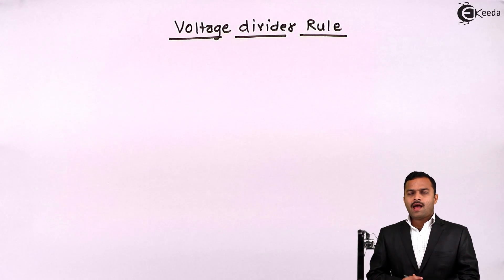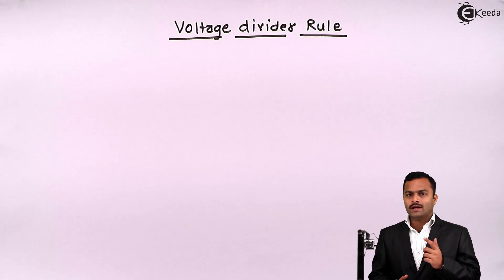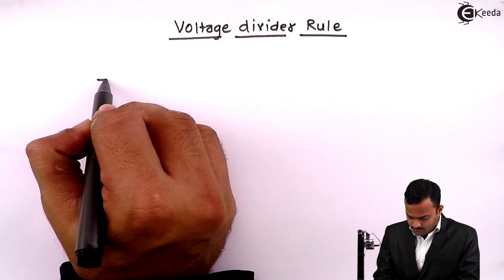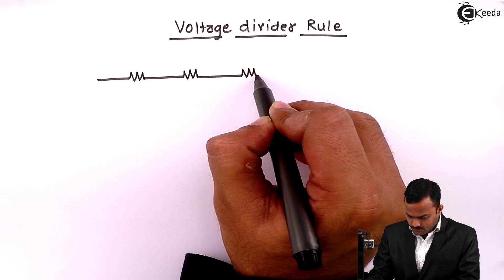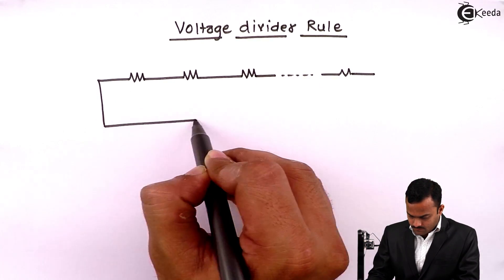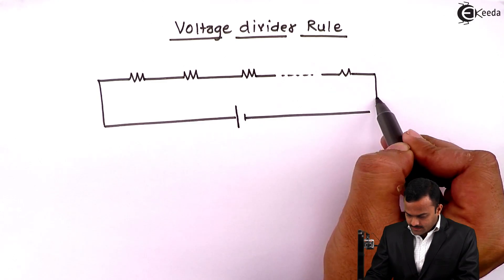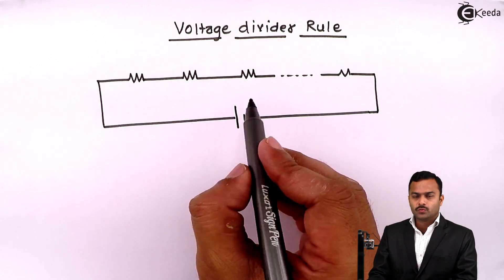So here we are having one series circuit having number of resistances connected in series in one loop. In a circuit, these resistances are excited by a voltage source V.